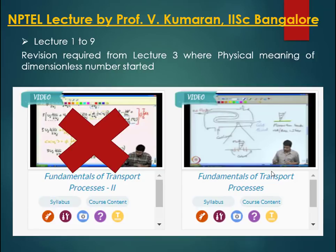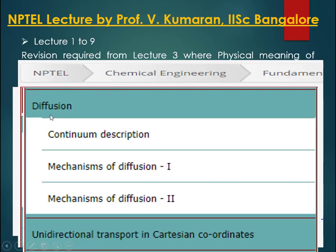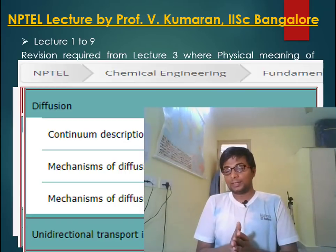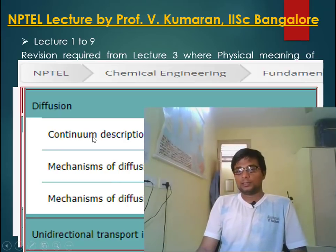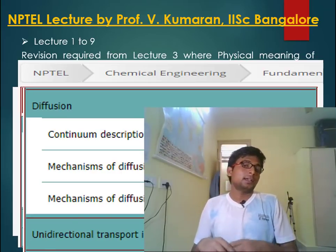Lectures 1 to 4 cover dimensional analysis, which is very important for GATE. Lectures 5 to 7 are on transport phenomena — mechanism of diffusion, diffusivity coefficient, different types of diffusivity in solid, liquid, and gas phases. Lectures 8 and 9 cover unidirectional transport in Cartesian coordinates. What I would recommend is to go through these video lectures, try to make notes, and since these three lectures will not cover everything about transport phenomena, use the Geankoplis pages I have already recommended.